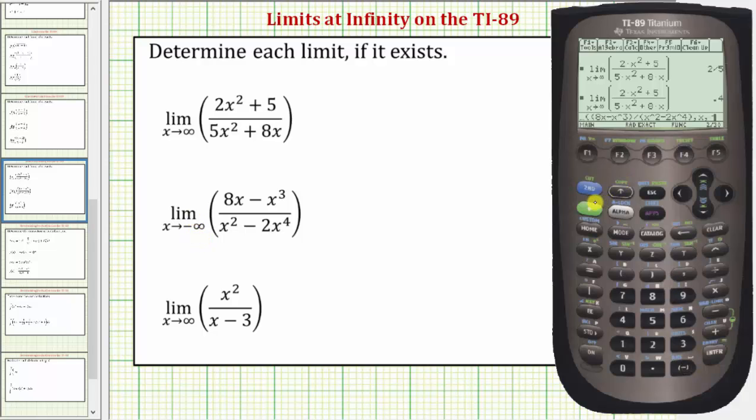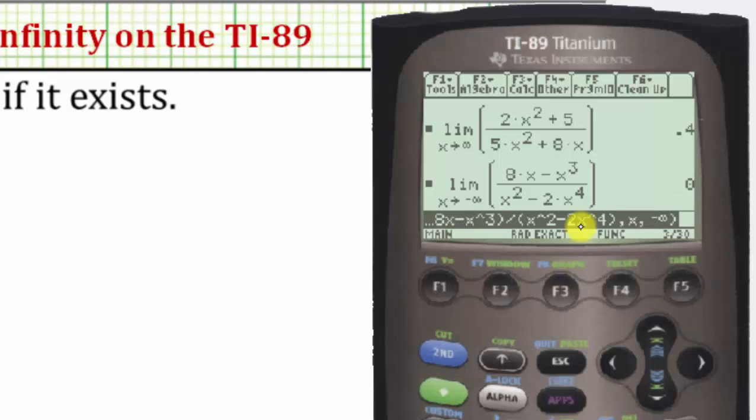so we enter negative infinity, so negative, and then diamond catalog, close parenthesis, and enter. Notice how this limit is equal to zero,